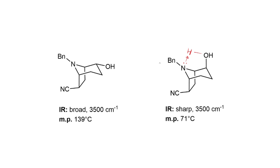The melting point is another interesting observation: 139°C for one compound versus 71°C for the axial alcohol. The higher melting point is presumably because in that molecule the hydroxyl is intermolecularly hydrogen bonding with other molecules in the crystal, leading to tighter association, whereas the axial alcohol's intramolecular hydrogen bond means the molecules interact less with each other.